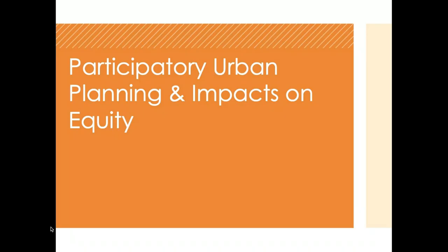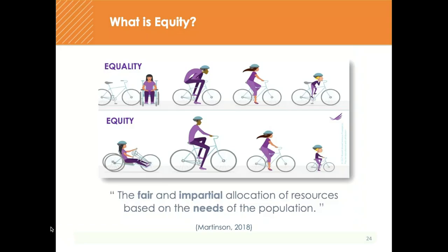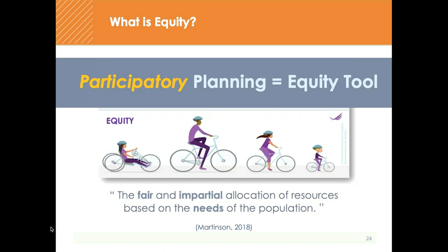Now that we have a general understanding of the impact of urban planning on health, I want to look at how this all relates to equity. Equity is the fair and impartial allocation of resources based on the needs of the population. It's not about giving everybody access to the same exact things, but rather access to the same opportunities. For example, giving everybody the same bike might only be comfortable for one person — that's an equality approach. An equity approach analyzes the needs of each individual and adapts the solution accordingly, so that in the end everybody can enjoy the same opportunities. Within participatory planning, equity starts in the process itself.